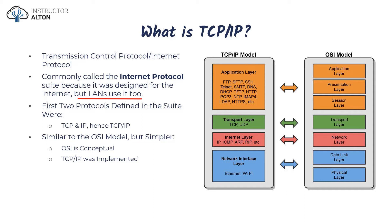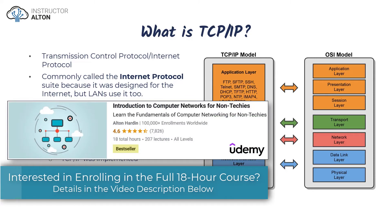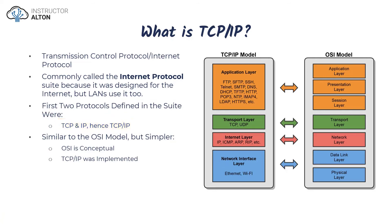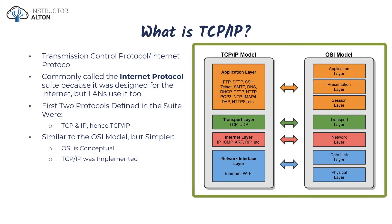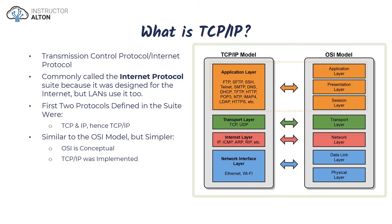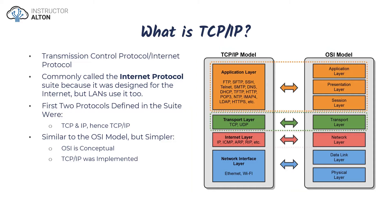You're probably wondering why it's called TCP/IP. It's called that because when they were designing and defining protocols, the first two protocols defined were TCP and IP — hence the name TCP/IP. Comparing this model to the OSI model: the OSI model has seven layers, while the TCP/IP model only has four layers. If you look at them side by side they do map, but there are some differences.